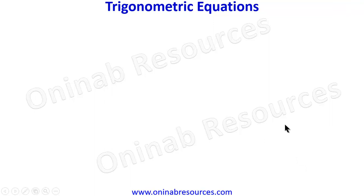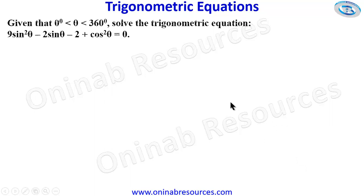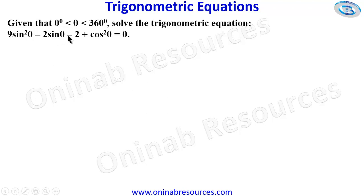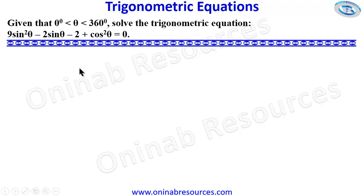Hello, welcome to this tutorial on trigonometric equations. We have our problem here: given that 0° < x < 360°, solve the trigonometric equation 9sin²θ - 2sinθ - 2 + cos²θ = 0. So we start the solution of the problem.